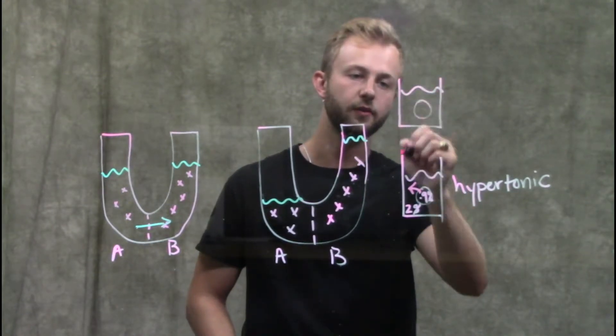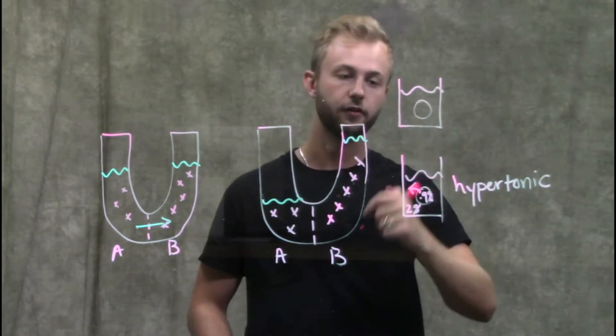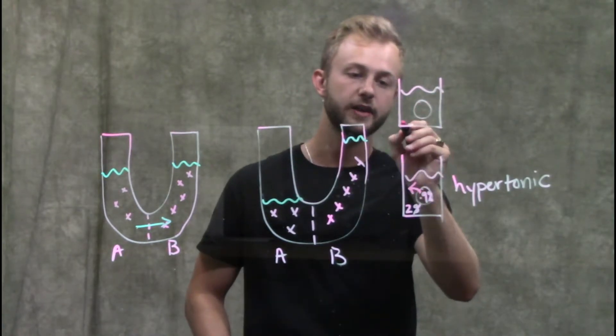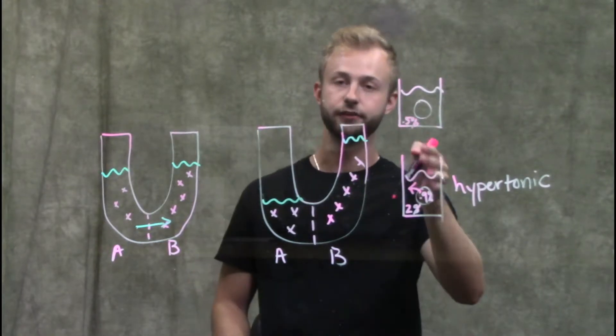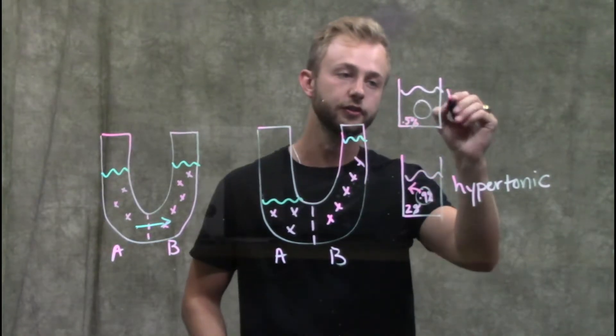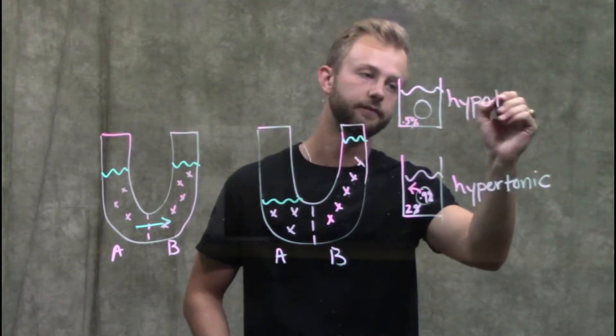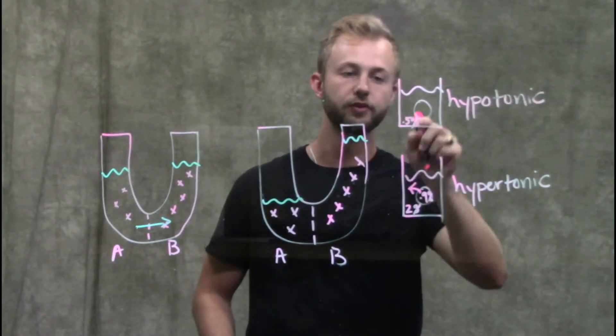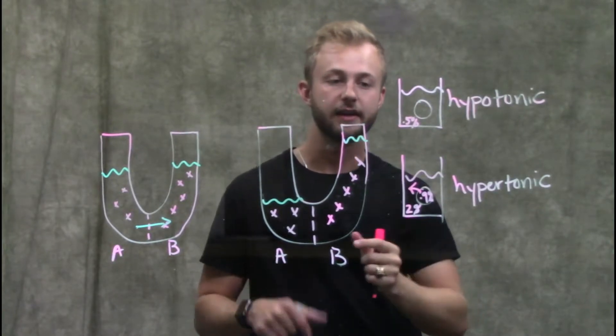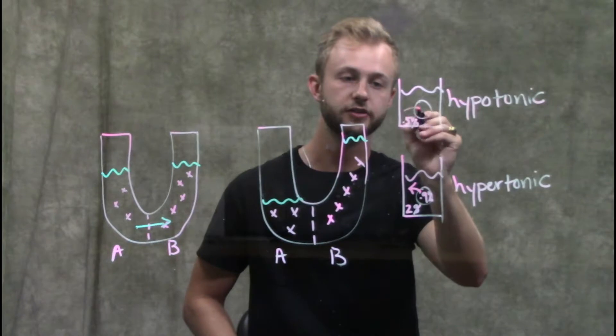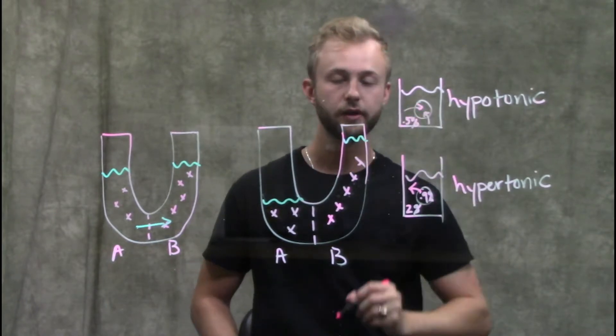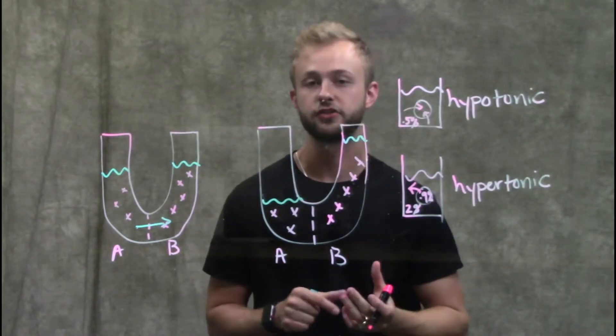Let's say we still have 0.9% sodium chloride on the inside of our red blood cell, but now let's say we have 0.5% sodium chloride in this solution. Now the solution is hypotonic to the inside of the red blood cell. Water is going to move to the region of higher solute concentration, so it will go into the red blood cell and the red blood cell will eventually burst.